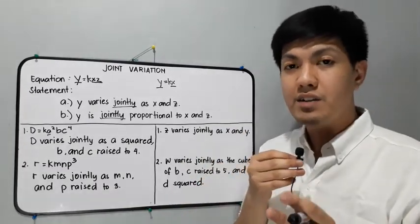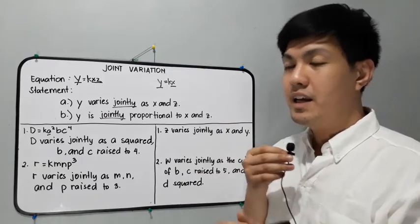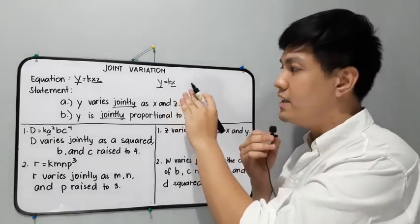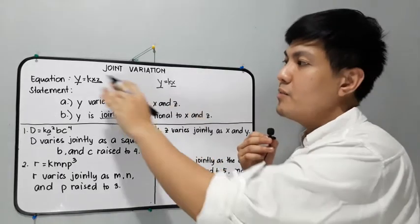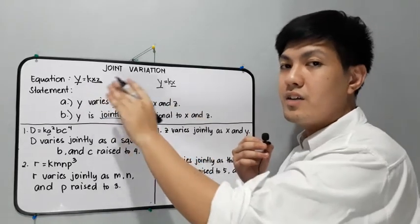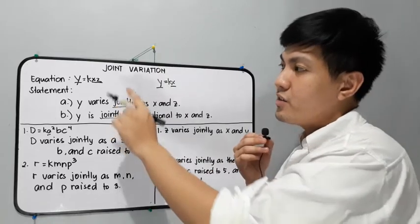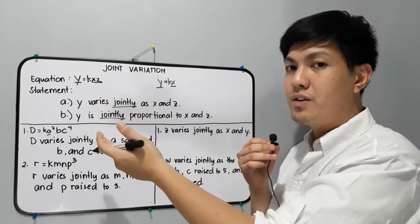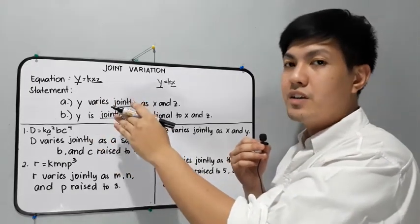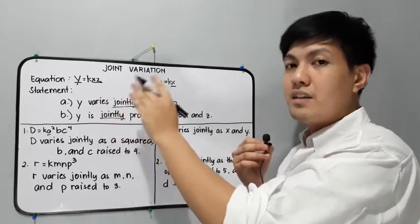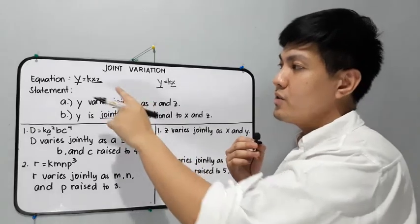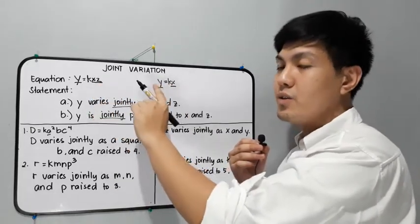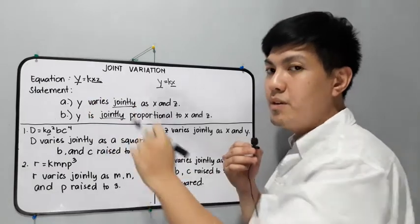Joint and direct variation also have a similarity. In direct variation, it doesn't have any variable in the denominator. Same with joint variation — it doesn't have any variable in the denominator. So even if more variables are added in joint variation, they all remain in the numerator. Joint variation cannot have a variable in the denominator.